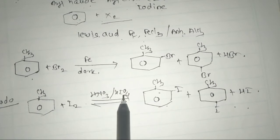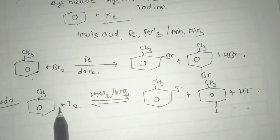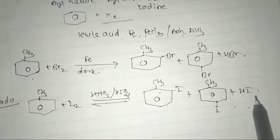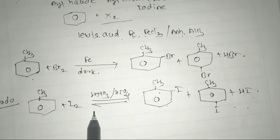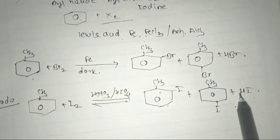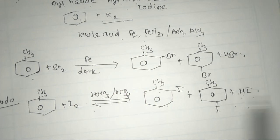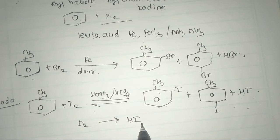The formation of iodo compounds is a reversible reaction. By using an oxidizing agent as a catalyst, HI produced in the reaction is removed by oxidation, driving the equilibrium forward.